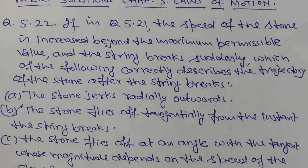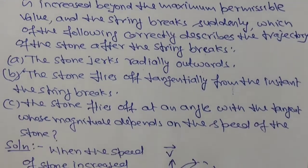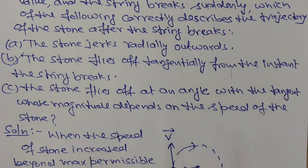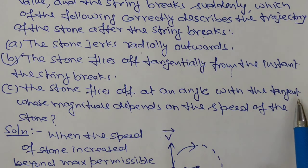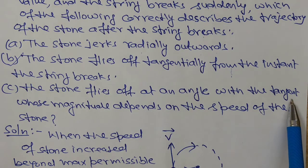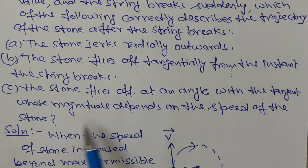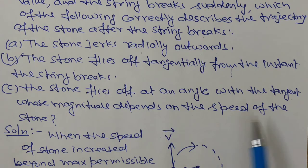In the third option, the stone flies off at an angle with the tangent whose magnitude depends on the speed of the stone.